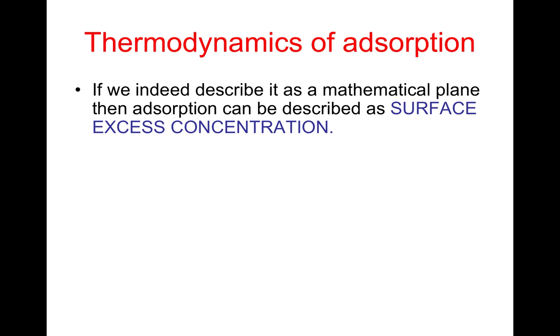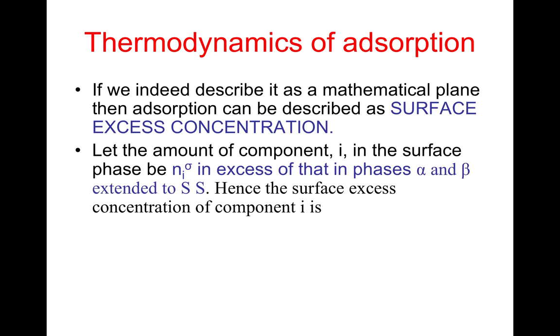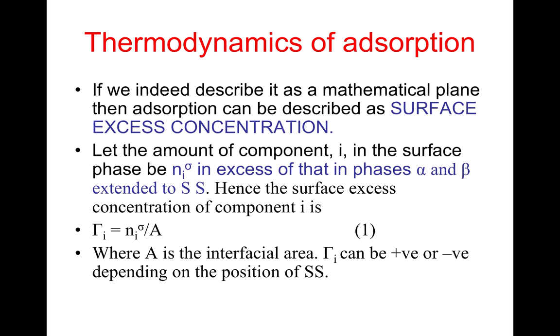If we indeed describe it as a mathematical plane, then adsorption can be described as surface excess concentration. Let the amount of component i in the surface phase be n_i^sigma in excess of that in phases alpha and beta extended to SS. Hence, the surface excess concentration of component i is capital gamma_i, which is equal to n_i^sigma over A. Here A is the interfacial area. Capital gamma_i can be positive or negative depending on the position of the SS line.